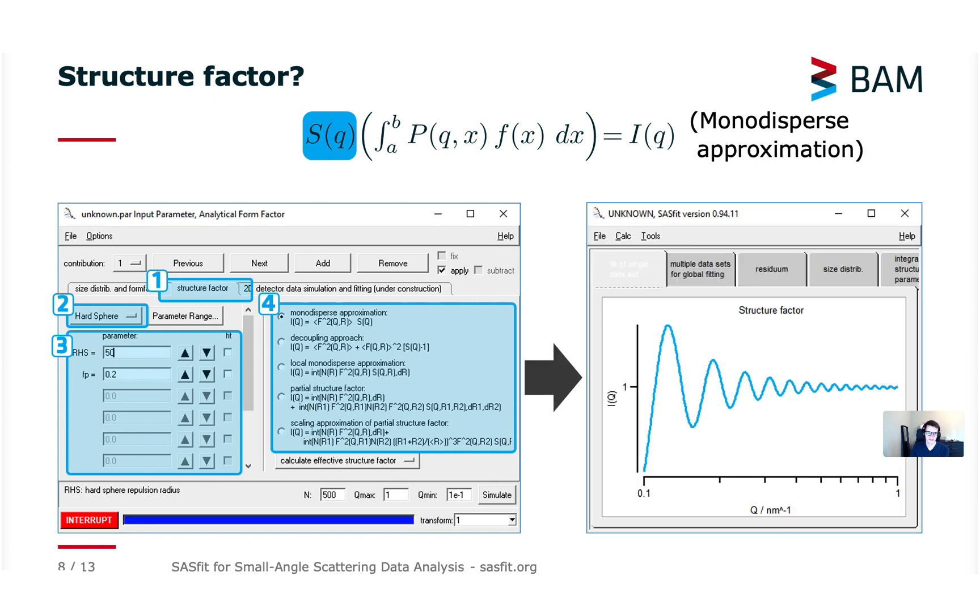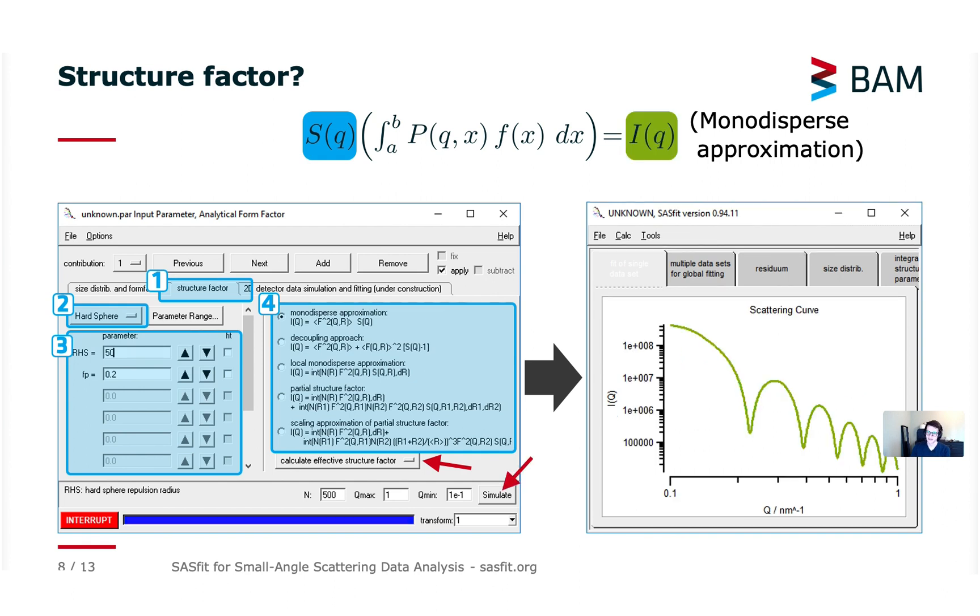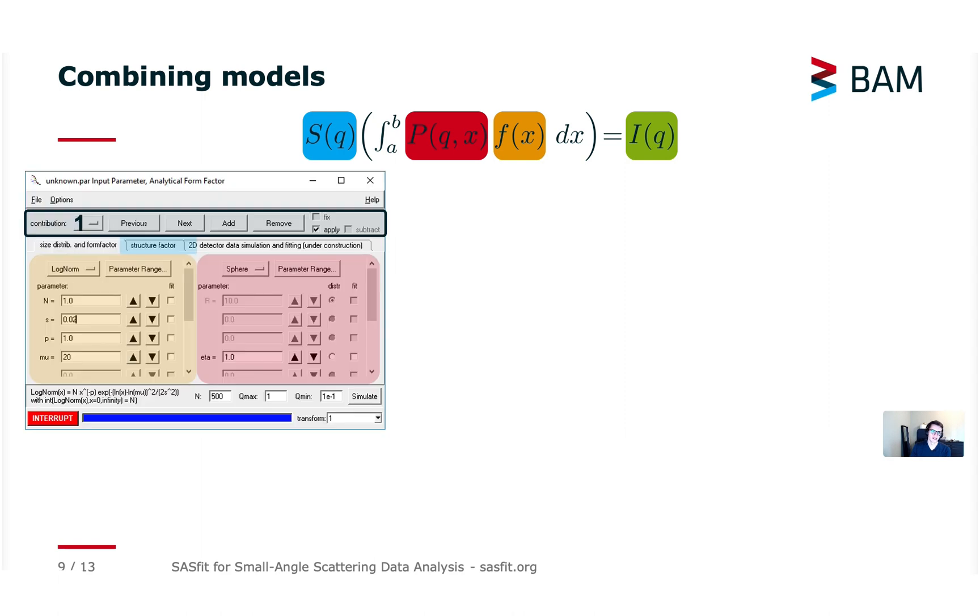So from here when the structure factor is configured I can easily plot the structure factor alone to have a quick overview of what the structure factor would look like. There's a button in the lower part there you can switch between plotting the structure factor alone or the actual intensity curve.